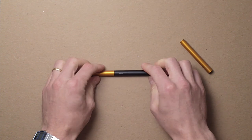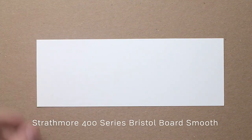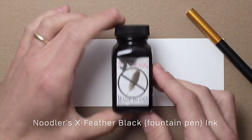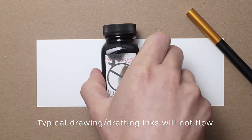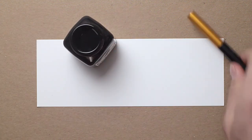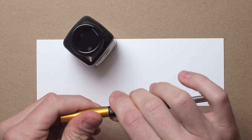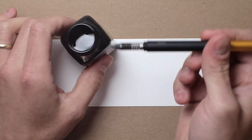All right, let's move on to a drawing sample. For this sample, I'm using Strathmore's 400 series Bristol board with Noodler's X Feather Black Fountain Pen Ink. You're going to want to use fountain pen inks with this pen. Your typical drawing inks or drafting inks are going to be a little too thick for this nib.